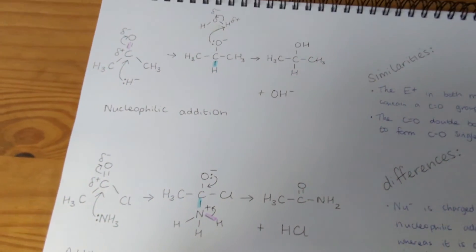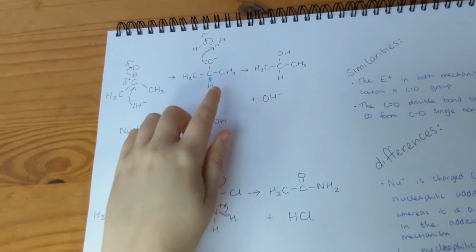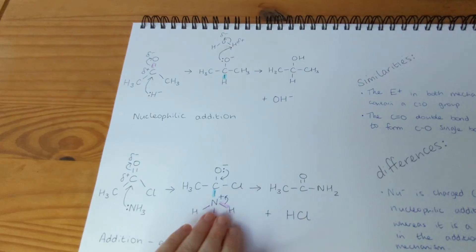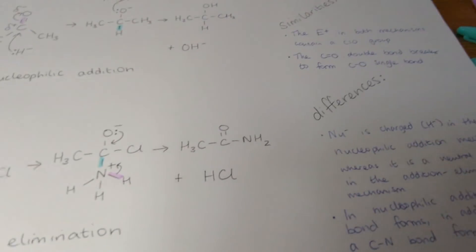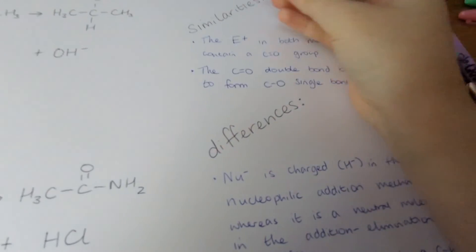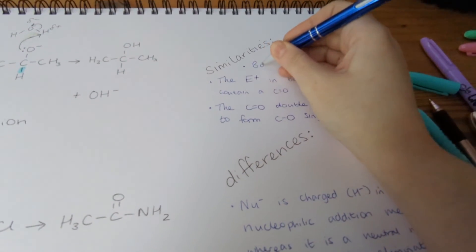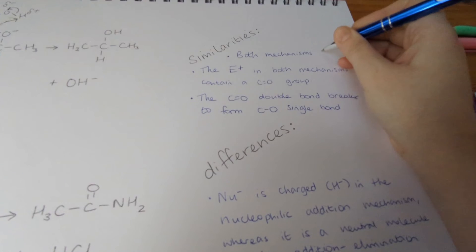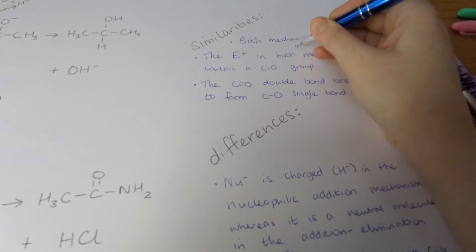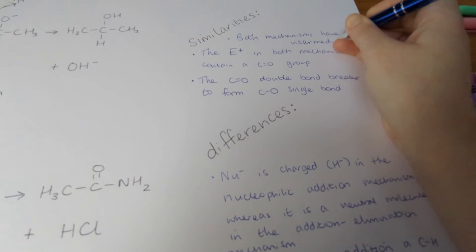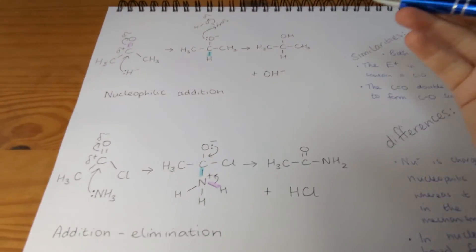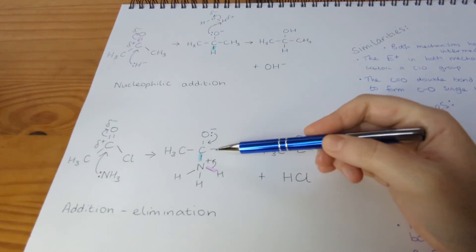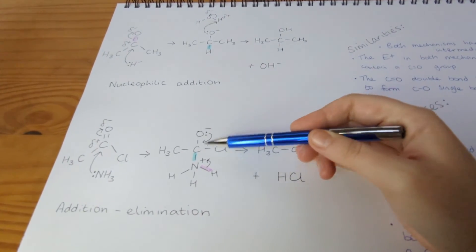Next, we can look at the intermediates. So an intermediate is something formed in the middle of a chemical reaction. And it usually has a charge. Which these two do. So we can jot that down for a similarity. I'll do that up here. And for a difference, we could say that this intermediate has a negative charge. Whereas the intermediate in this reaction has two charges. A negative and a positive.